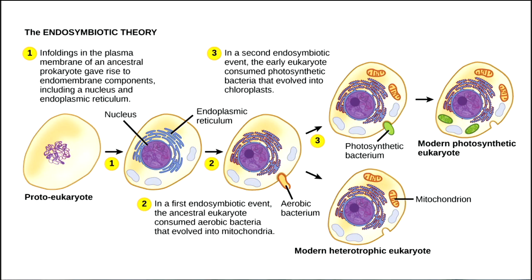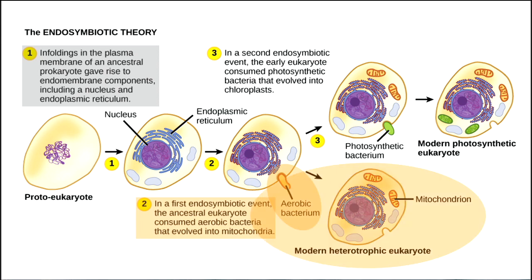Let's talk about the details of Lynn Margulis' endosymbiotic theory. First, you get a nucleus and the endoplasmic reticulum in blue, whose membrane is part of the nuclear membrane. Then along comes the first endosymbiotic event, in which an aerobic bacterium — something like an alpha proteobacterium — gets engulfed, and then completely engulfed, and you become a modern heterotrophic eukaryote with mitochondria inside — that's what our cells look like. Then there's a second endosymbiotic event for plants, where a photosynthetic bacterium gets engulfed and, when completely incorporated, you call it a modern photosynthetic eukaryote with both mitochondria and chloroplasts inside.